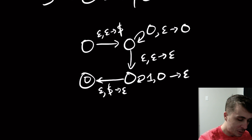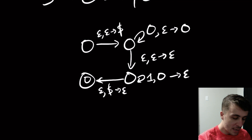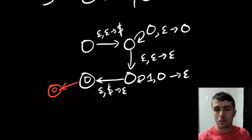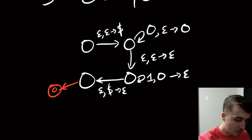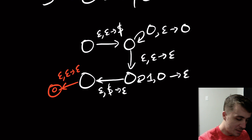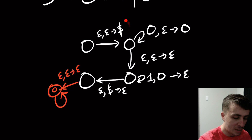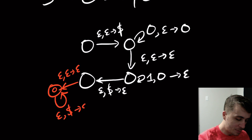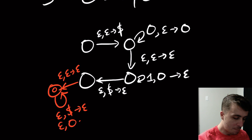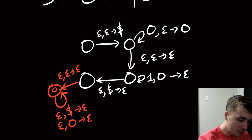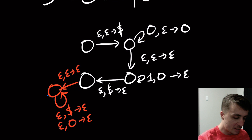The first thing is to have a single final state — we already have one, but I'll apply the construction without thinking about the PDA's structure. We add an epsilon transition to a new state, which self-loops and pops off anything that is not the new special symbol. The symbols used in the stack are the dollar sign and zero, so we add transitions: epsilon/dollar-sign→epsilon, and epsilon/zero→epsilon, to pop them off if needed.